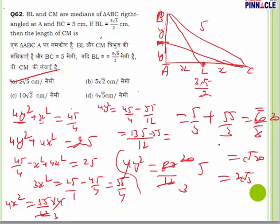What we did: we used BC = 5 (hypotenuse) and BL = 3√5/2 (given median), set up two Pythagoras equations, divided the sides into equal halves (x,x and y,y), solved for x² and y², then combined to find CM. Such questions can take over a minute but create the difference.